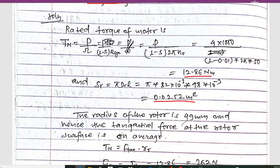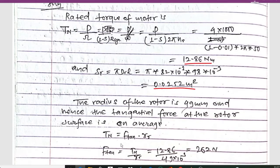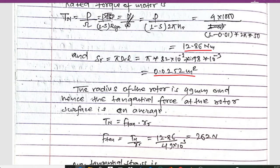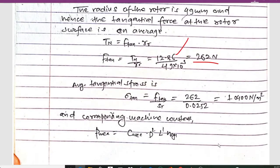The average tangential force at the rotor surface is given by Tn = Ft × rr, so Ft = Tn / rr. We have Tn = 12.86 Nm and the rotor radius rr = 49 mm = 49 × 10⁻³ m. This gives Ft = 262 Newtons.